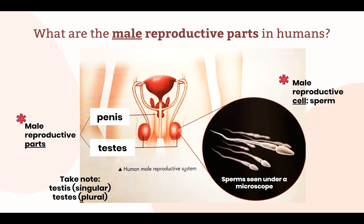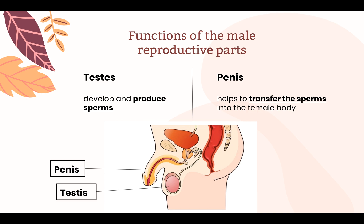The singular form is spelled T-E-S-T-I-S. The male reproductive cell produced in the human body is called the sperm. The testis develops and produces sperms — the male reproductive cells — and the penis helps to transfer the sperms into the female body. This diagram shows the side view of the male reproductive system. As we can only see one testis in this diagram, it is singular and we spell it T-E-S-T-I-S.